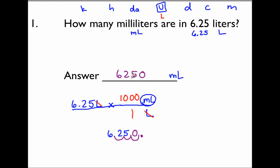The answer is 6,250 milliliters. Put in your commas: 1, 2, 3. When you're calculating, please don't put commas in your work because you'll confuse them for decimal points. Put your commas only at the very end on the answer line. So I just converted 6.25 liters to milliliters — there are 6,250 milliliters in 6.25 liters. Let's move on to the next problem.